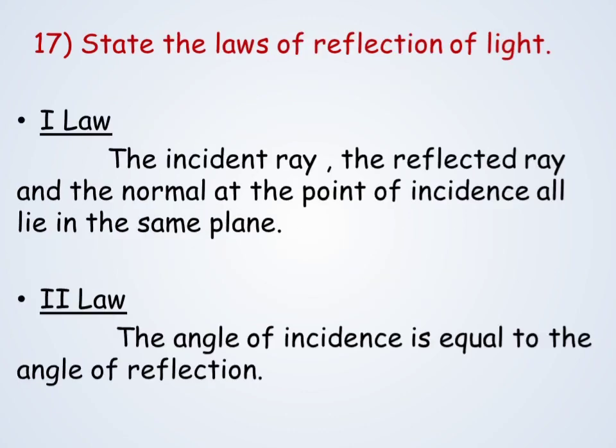State the laws of reflection of light. First law: the incident ray, the reflected ray, and the normal at the point of incidence all lie in the same plane. Second law: the angle of incidence is equal to the angle of reflection. These are the two laws of reflection of light.